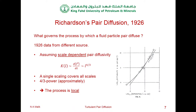Richardson gave a specific number to this power: four-thirds, which he more or less guessed from the data. And actually, the four-thirds — I'll show you in a moment — is actually equivalent to locality. He didn't use the word 'locality' in those days, but it is actually equivalent to locality, in a very easy way. So this is the basis of Richardson's locality theory.